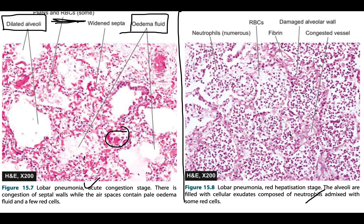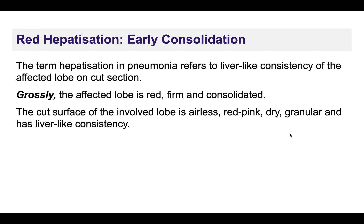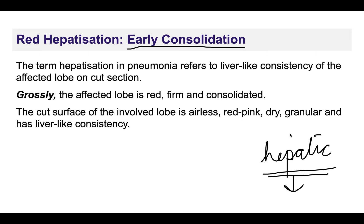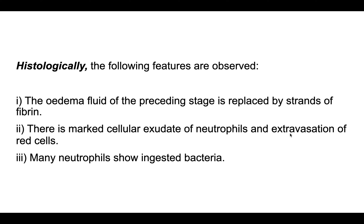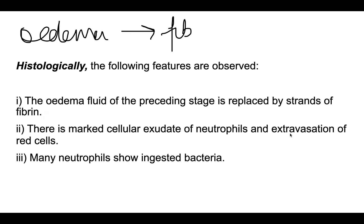The second stage is red hepatization, also known as the early consolidation phase. The term 'hepatization' refers to a liver-like consistency of the lung. The affected lobe is red, firm, consolidated, airless, and has a liver-like consistency. Histologically, the edema from the first stage is replaced by fibrin, and there is an increase in neutrophils and RBCs — this is the key difference from the congestion stage.